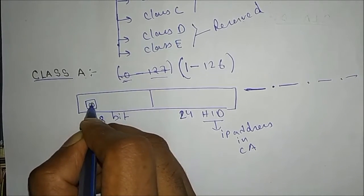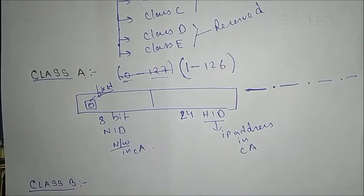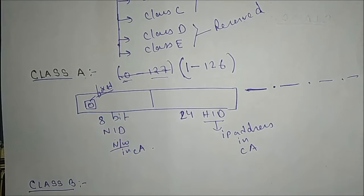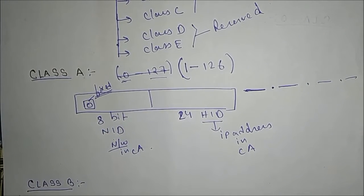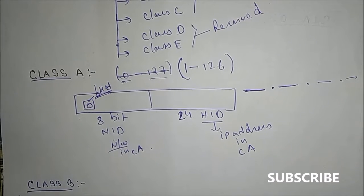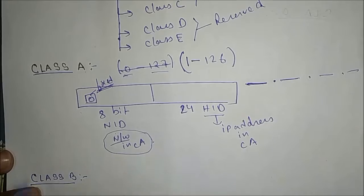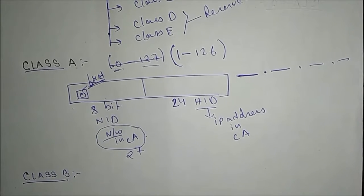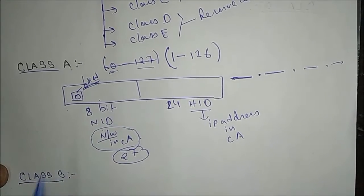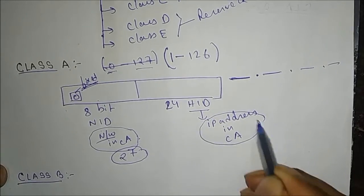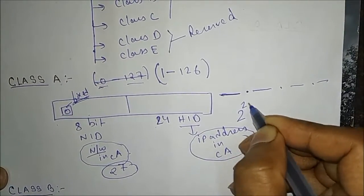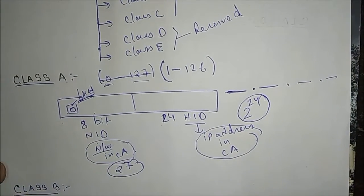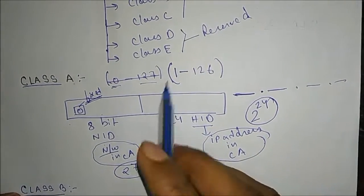In the 8-bit Network ID of Class A, 1 bit is fixed as zero. I will explain why in another video when covering subnetting and directed/limited broadcasting addressing. With 1 bit fixed, 7 bits remain, giving 2^7 possible networks in Class A. For the 24-bit Host ID, there are 2^24 possible IP addresses — a huge number. So Class A range is 1 to 126.